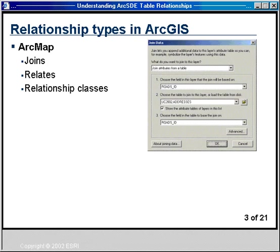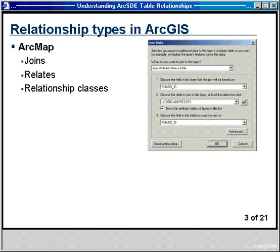There are different ways to create relationships between tables in ArcGIS. In ArcMap, we can build relationships by joining tables together, relating tables together, or by creating relationship classes. ArcMap provides various dialogues to help you step through the process. The join dialogue is where you specify which columns to use for the join and which tables to join. We'll take a look at this in the first demo.